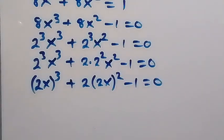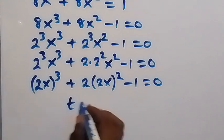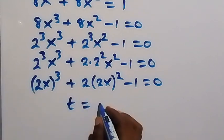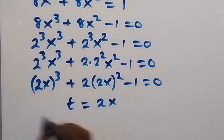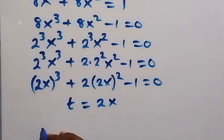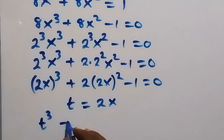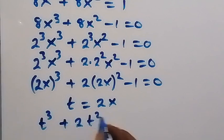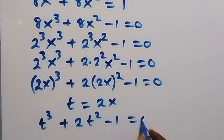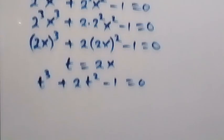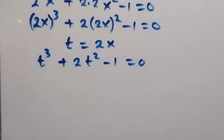So we have 2x common. Let t be equal to 2x. Then this equation can be written as t raised to the power 3 plus 2t squared minus 1 equals to 0. Then we have a cubic equation here.